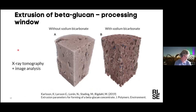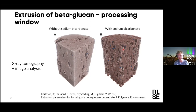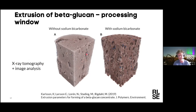Now I come to another example about extrusion — looking into the processing window of extruded beta-glucan. The foaming properties were in focus, and we wanted to see the effect of sodium bicarbonate. Here is a sample without and one with sodium bicarbonate. The study was done with X-ray tomography, and Emanuel did a lot of nice image analysis. We can look into pore size distribution and connectivity between different phases. Adding sodium bicarbonate gives a more fluffy foam with more pores, but interestingly, even with fewer pores, the connectivity is better in that structure — something a little unexpected at first sight, but clearly revealed with X-ray and image analysis.